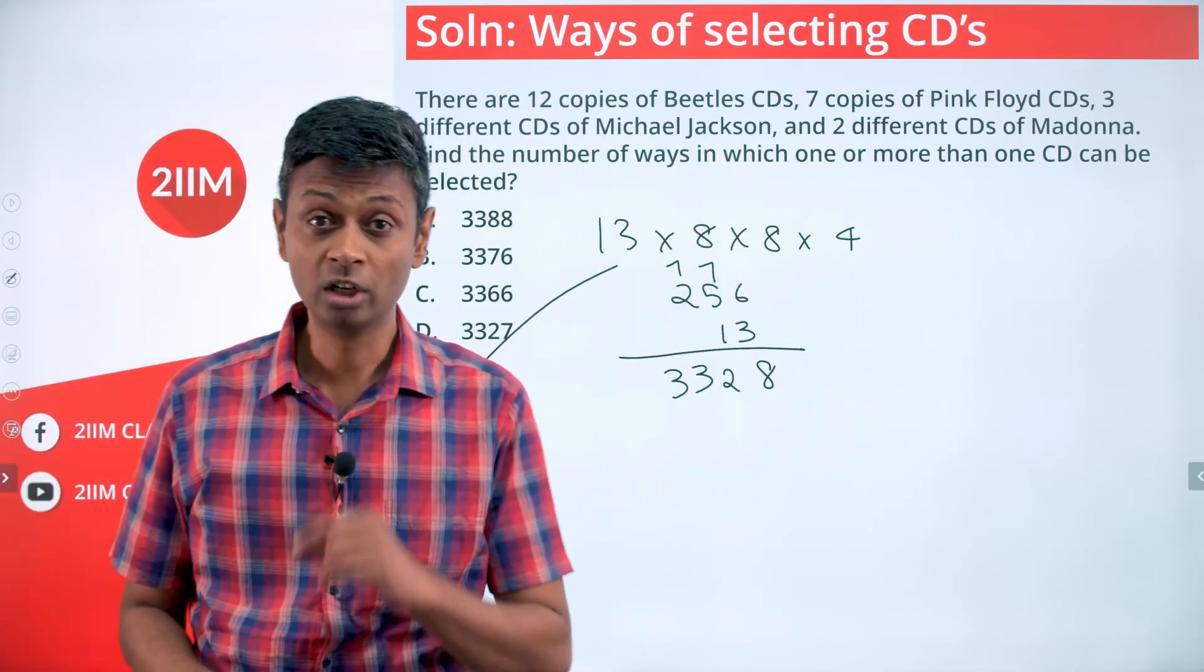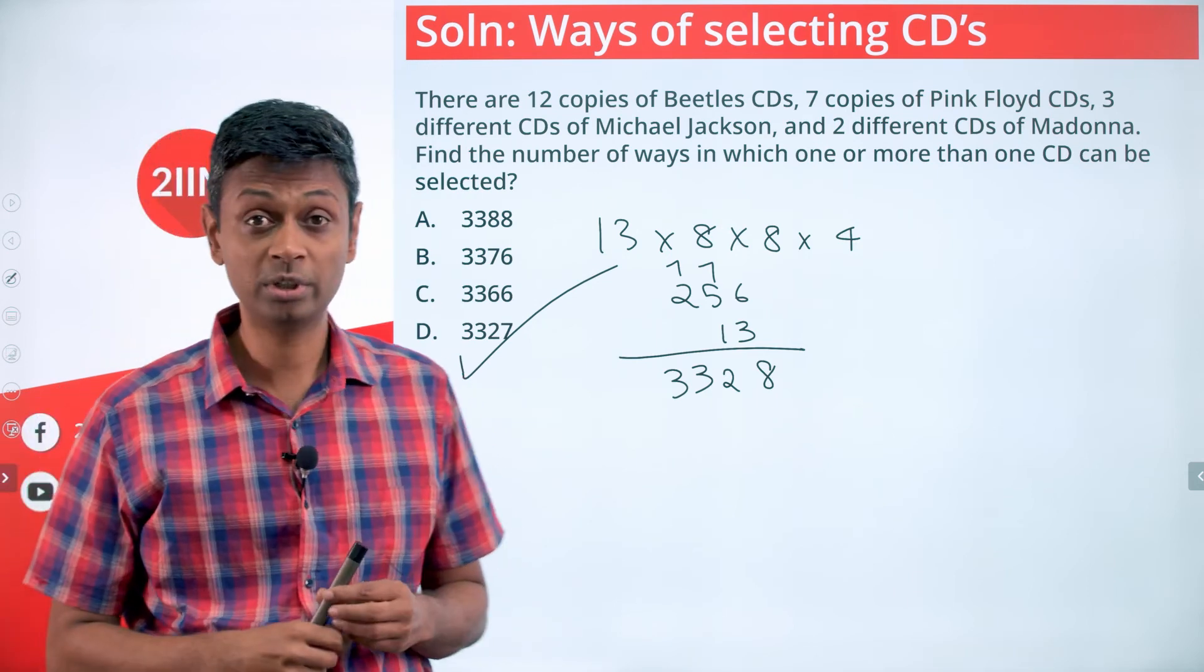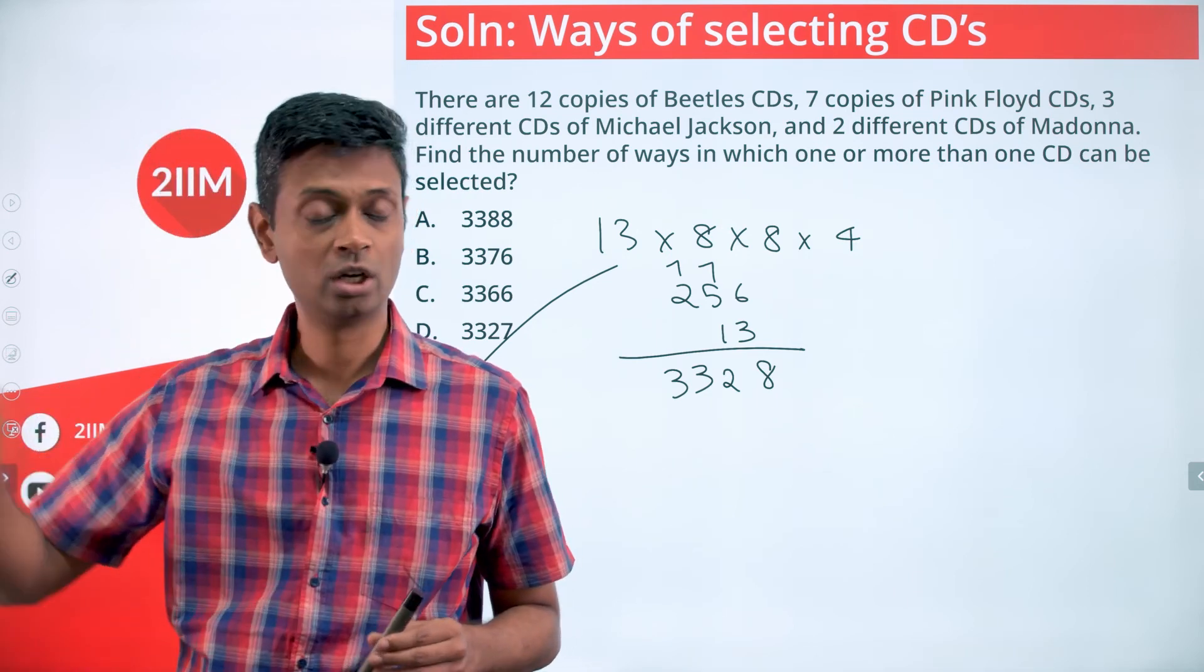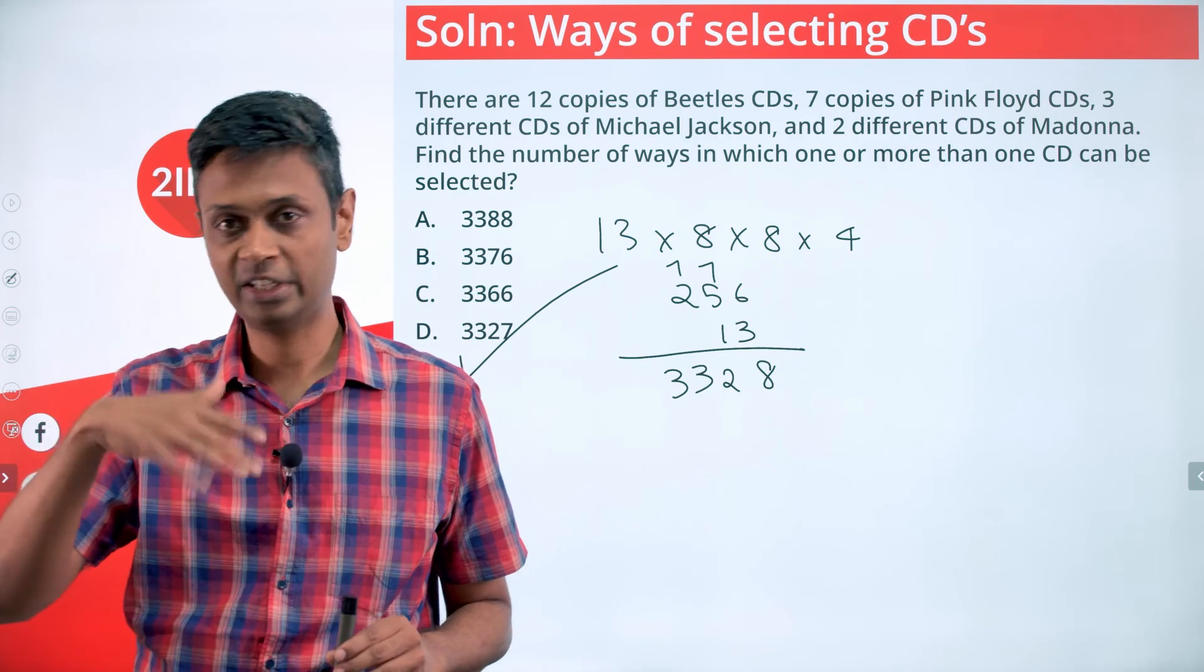We subtract that one because this will include the possibility that nothing at all is selected, which we can't include. Subtract that one in the end, and we're good to go.